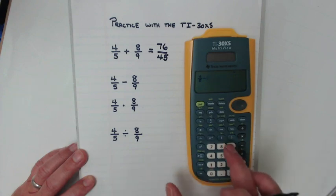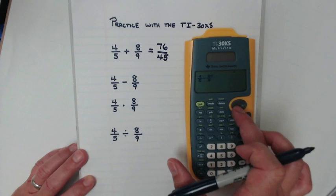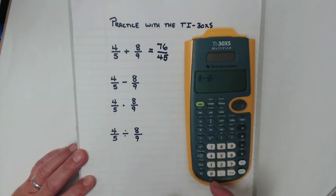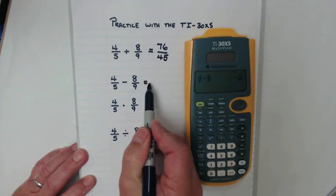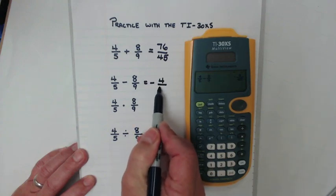Minus. Fraction button. Eight, move it down. Ninths. Enter. I get negative 4/45.